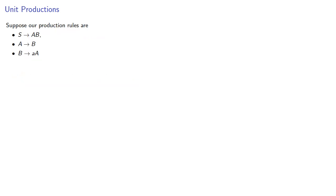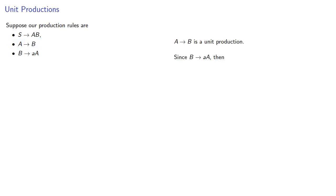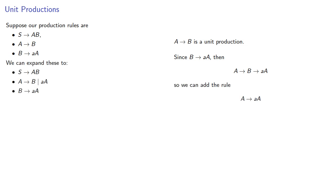Suppose our production rules are S produces AB, A produces B, and B produces AA. A produces B is a unit production. Since B produces AA, then A produces B produces AA, and so we can have the rule A produces AA.